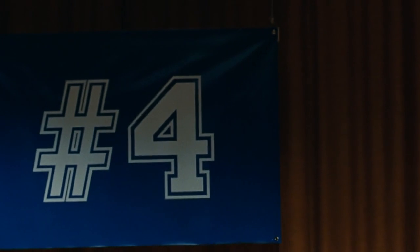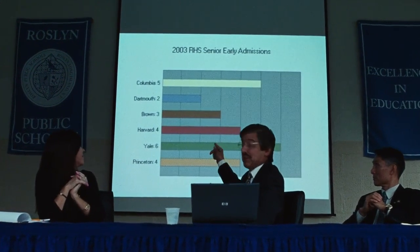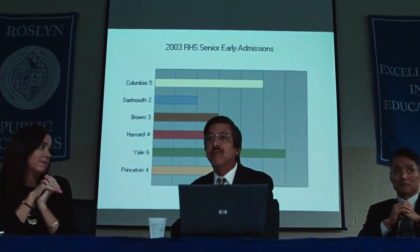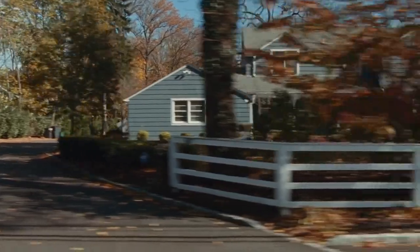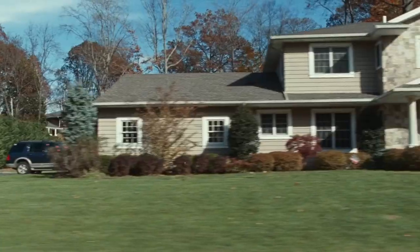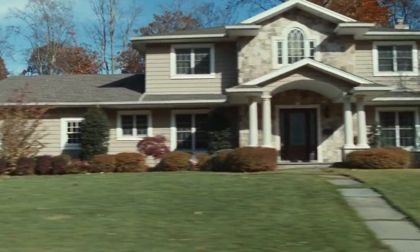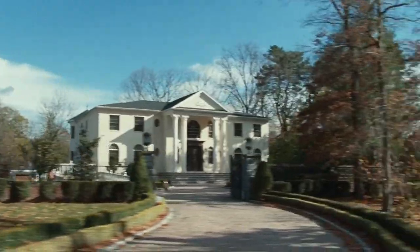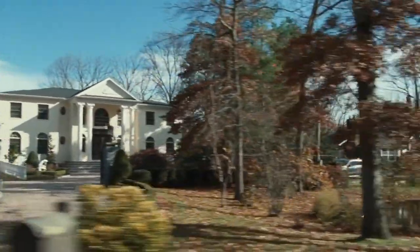At the very beginning of the movie, we find Superintendent Frank Tassone in a very similar position. Along with School Board President Bob Spicer, he's trying to get Roslyn's school district to the number one spot in national public school rankings. A high ranking means higher property values, which means higher property taxes to fund the school's budget and line the pockets of administrators like Bob and Frank.